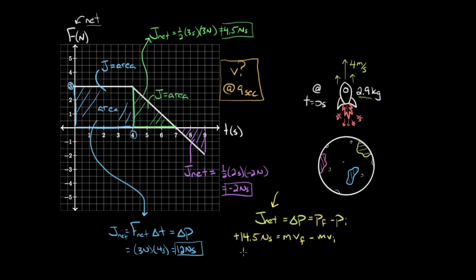So if we do that, if we assume the mass is constant, we get positive 14.5 newton seconds equals, we can pull the mass out, the mass is a constant, so I could just write it as M times V final minus V initial. Since I could pull out a common factor of M, which means I can write this as 2.9 kilograms, multiplied by the final velocity after nine seconds, and I know it's after nine seconds, because I added up all the impulse during the nine seconds, minus the initial velocity was four meters per second.